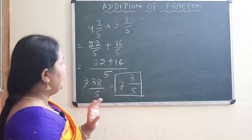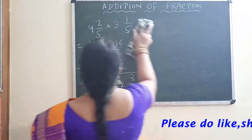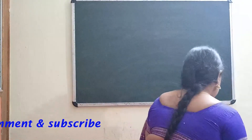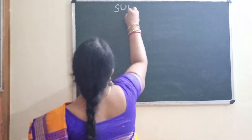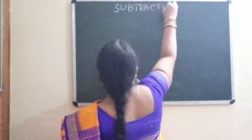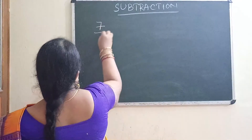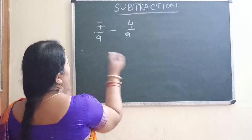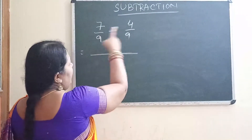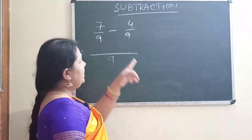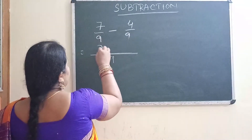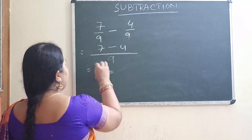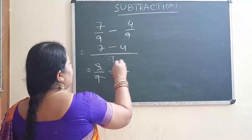This is all about addition of fractions. For subtraction the process is the same — the only difference is we subtract instead of add. For example: 7 by 9 minus 4 by 9 — these are like fractions. The formula is the same: common denominator 9, then find the difference of numerators: 7 minus 4 equals 3, giving 3 by 9. Simplify by dividing by 3 to get 1 by 3.